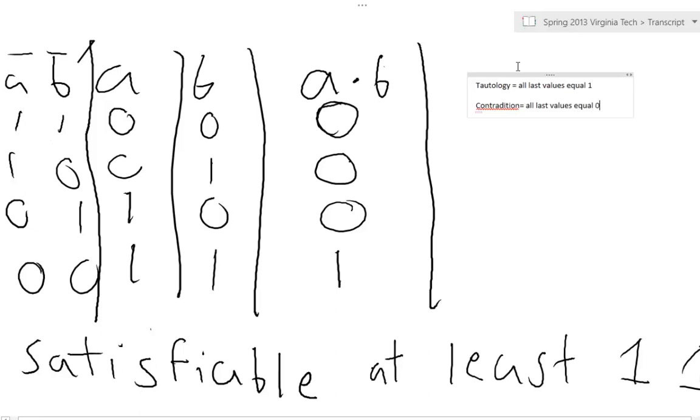So, you may be asked on the test, is this a tautology? And what you do is you fill out the truth table for that equation and see if every single combination equals 1. And if it does, you know it's a tautology. Or if equals 0, you know it's a contradiction. And maybe they won't even ask you about Satisfiable. But you know it's Satisfiable if at least one of them is true.